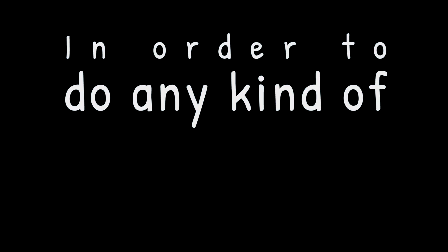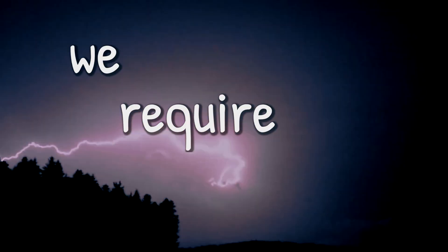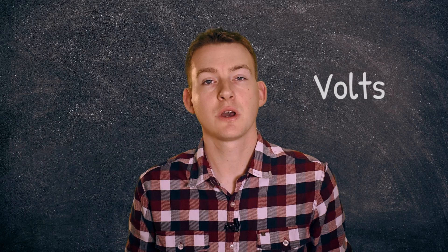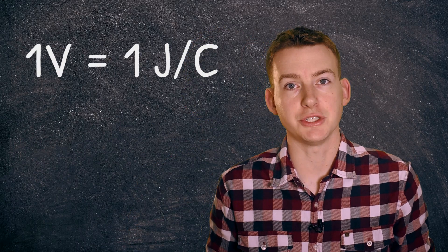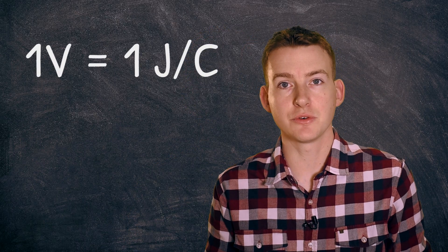In order to do any kind of work we require energy. Electrical light bulbs require electrical energy so that they can convert it into light energy. Energy is measured in joules, and the number of joules that each coulomb gives to a component is known as volts. One volt equals one joule per coulomb.